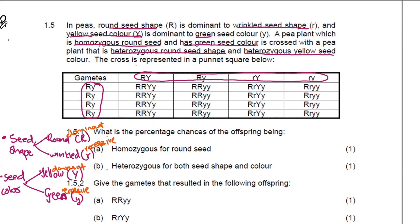Let's look at the first parent. They've said a pea plant which is homozygous round seed — that means it will be capital letter R, capital letter R, homozygous, since round seed shape is dominant over the recessive one. It also has green seed color, so that is small letter Y, small letter Y. That's the genotype for the first parent.